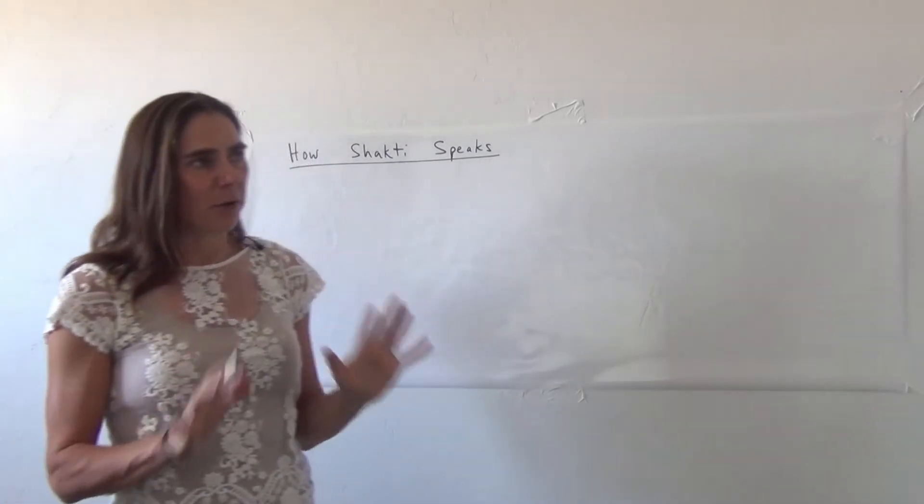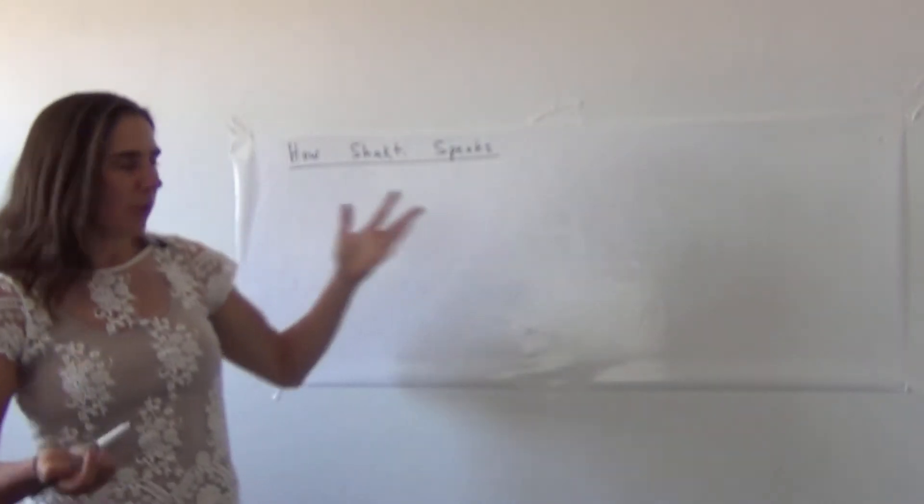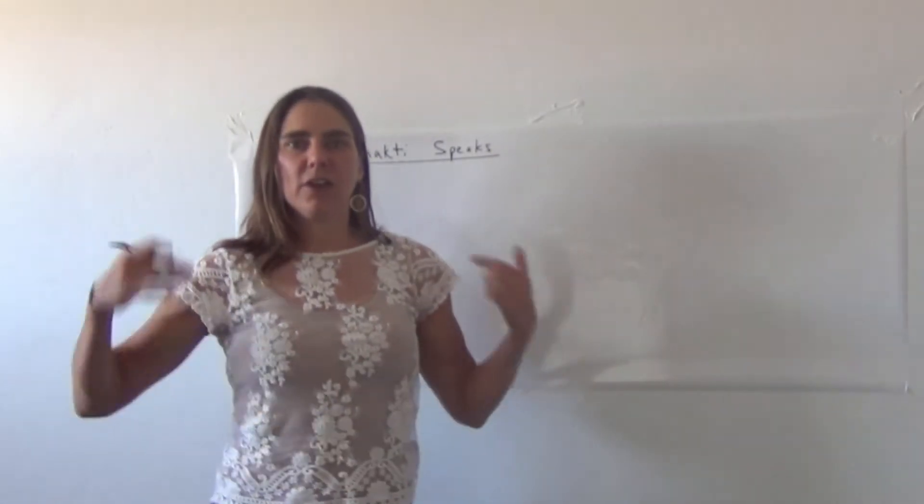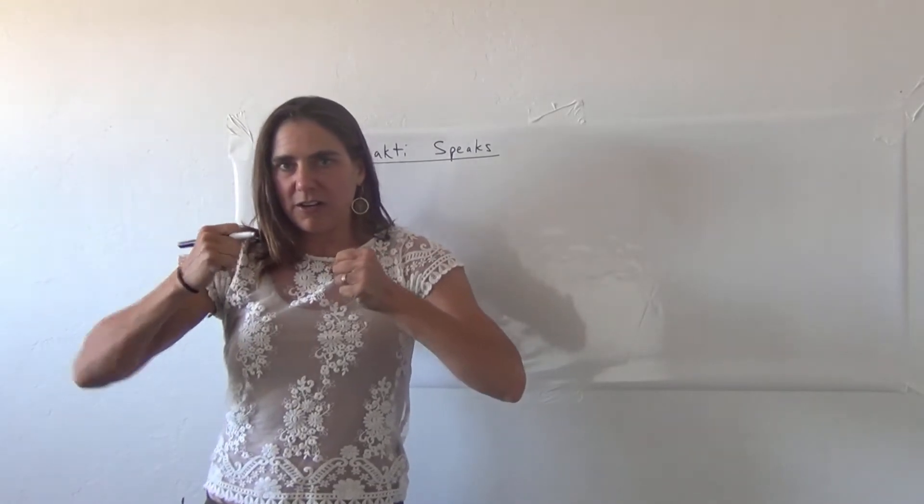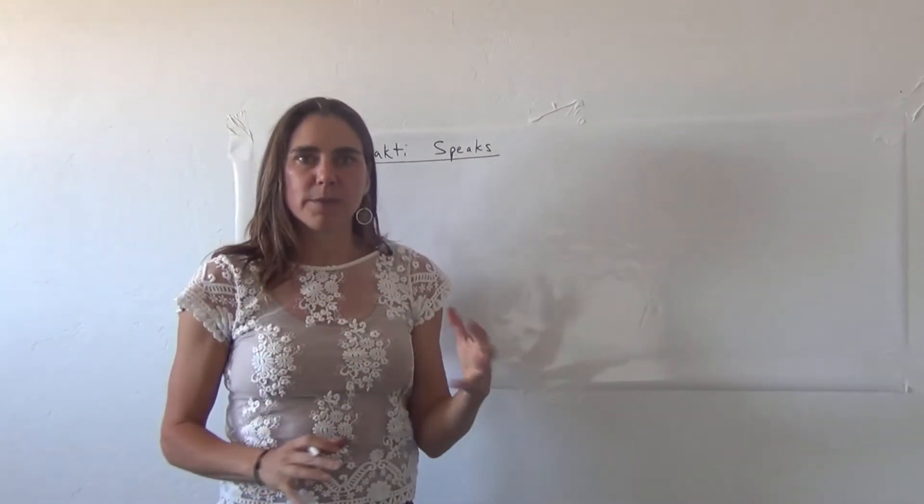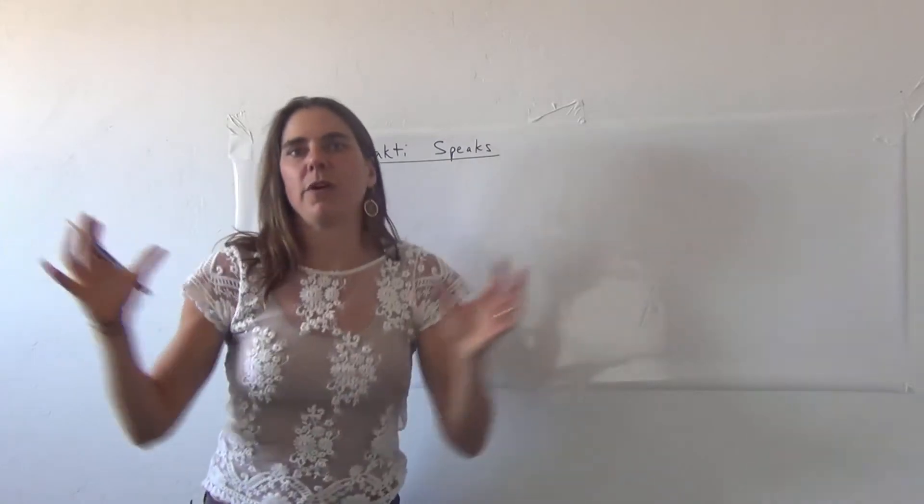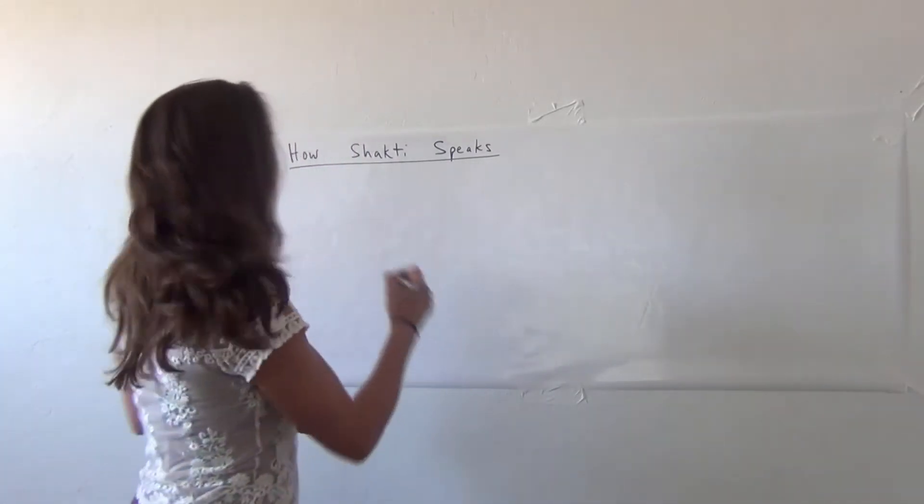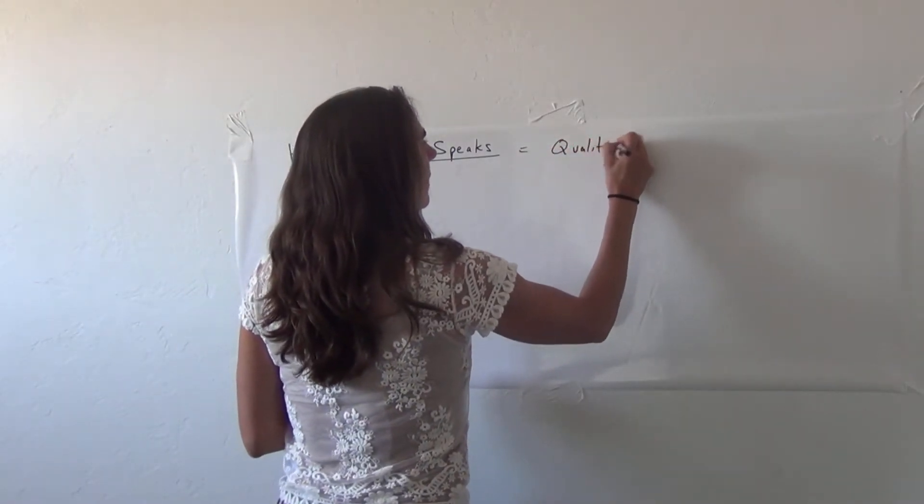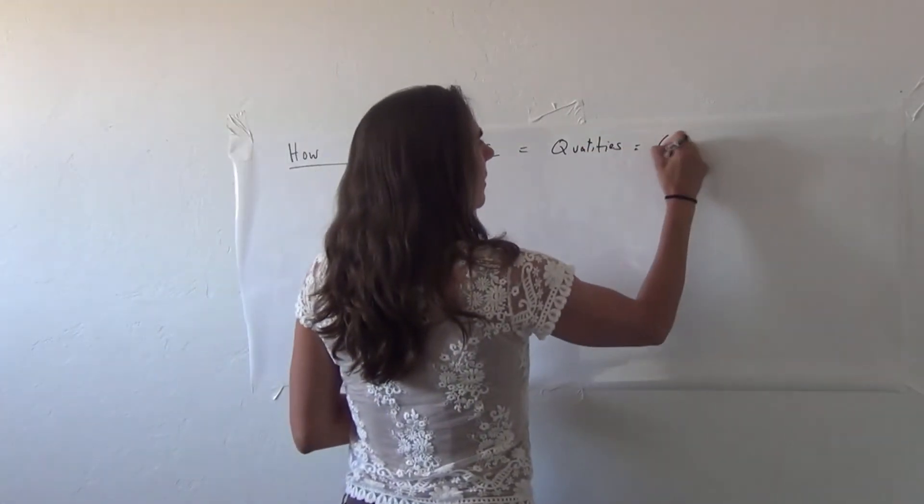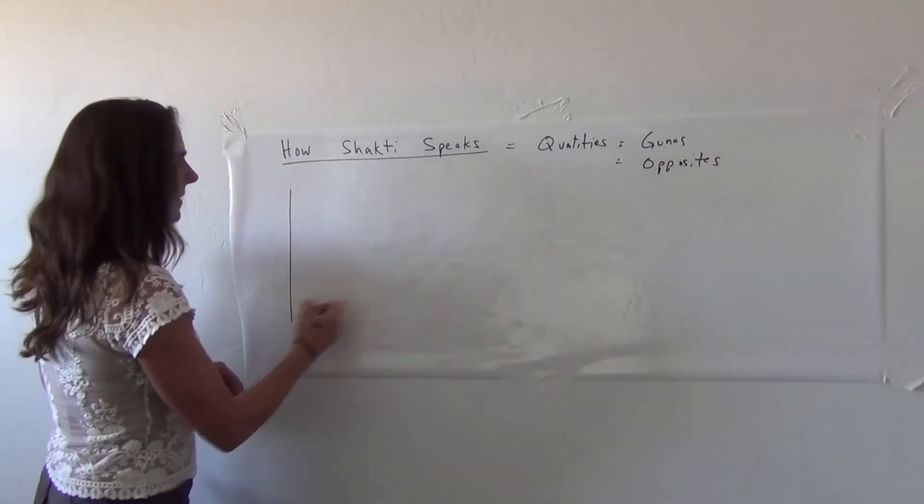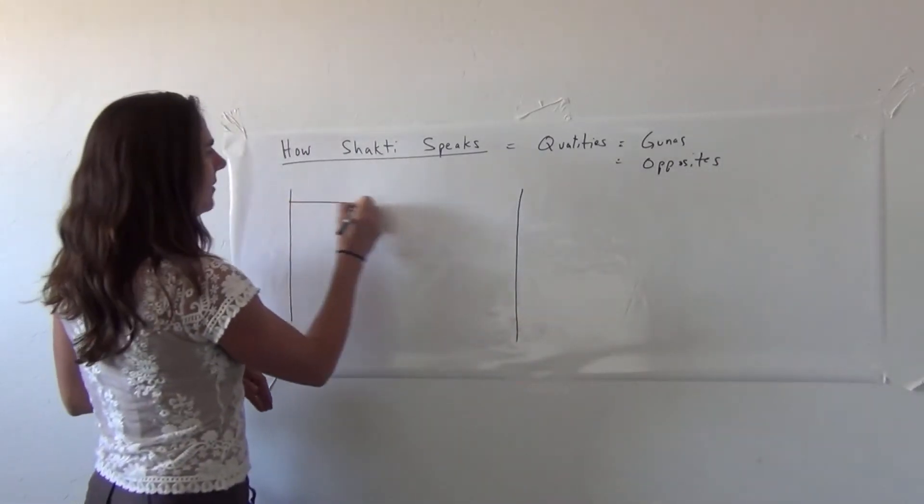What is the language of energy in the body? What we know is that energy speaks through opposites. We live in a world of up, down, expand, contract. There are different ways that we see the opposites in action. The yogis call those opposites spanda, where we have pulsation in the realms of duality. The way that Shakti speaks is through what we call gunas or qualities, spectrums of opposites.